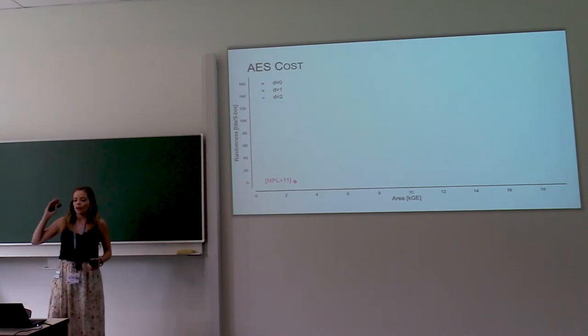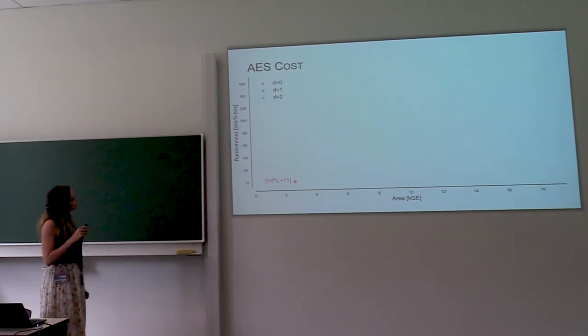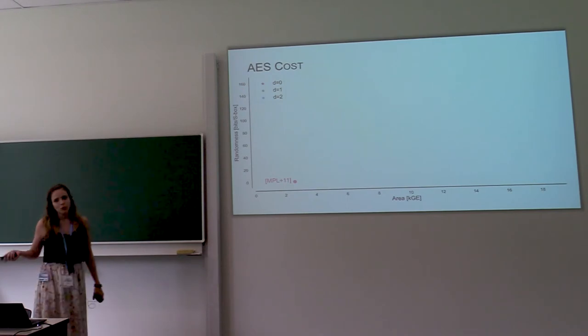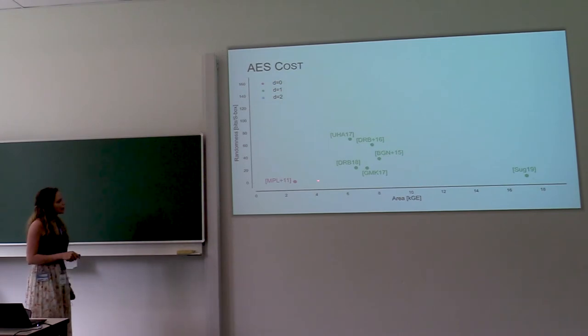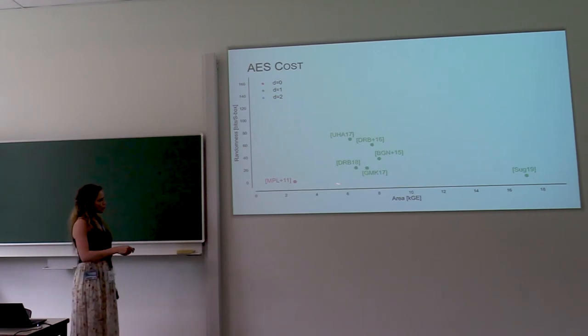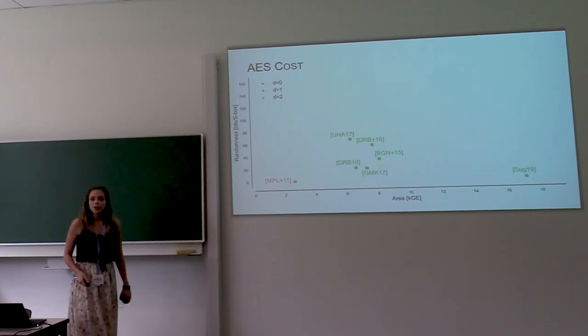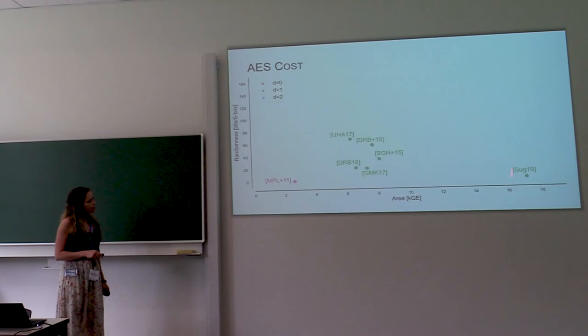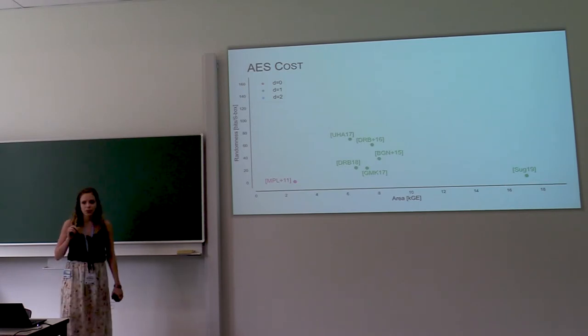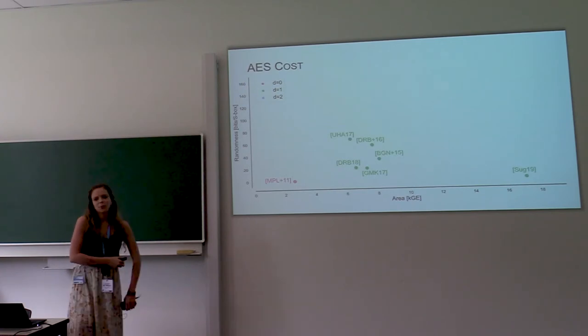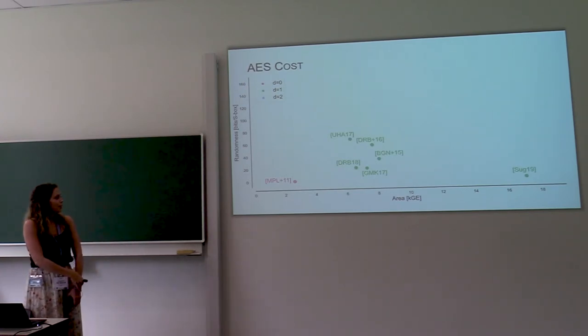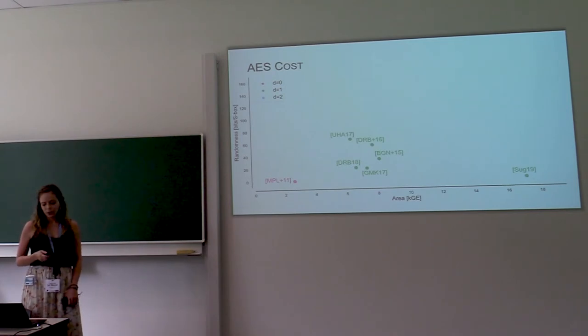Then you might be more interested in what an AES implementation costs. So we have here an unprotected AES implementation, which of course uses zero randomness. And it costs between 2,000 and 3,000 gates because this is a serial implementation that has only one S-box. And the S-box is used for all the 16 bytes of the state. So what happens if you add first order protection? There are a lot of works on this. But you see that the area at least doubles.